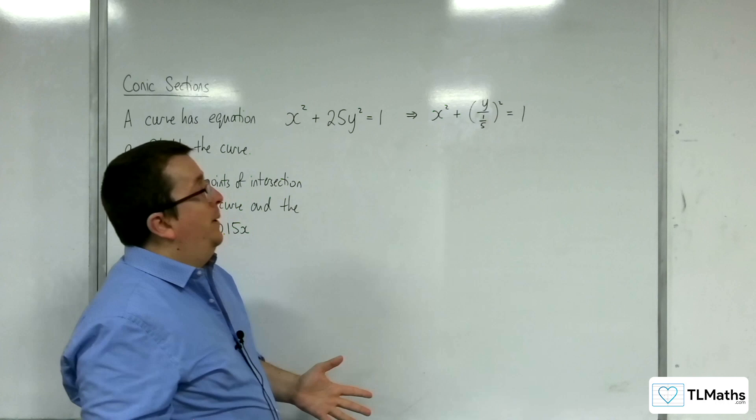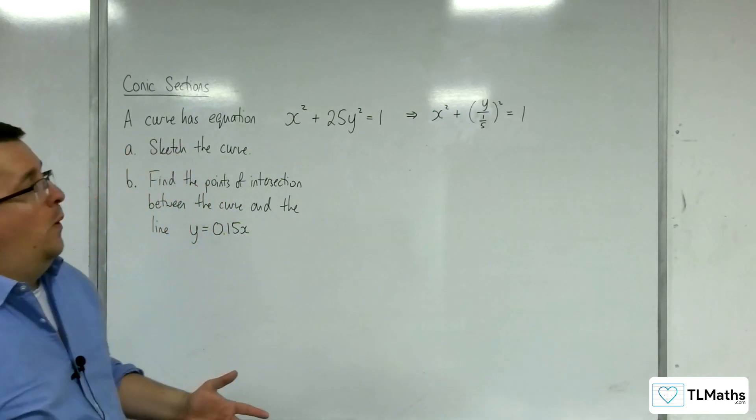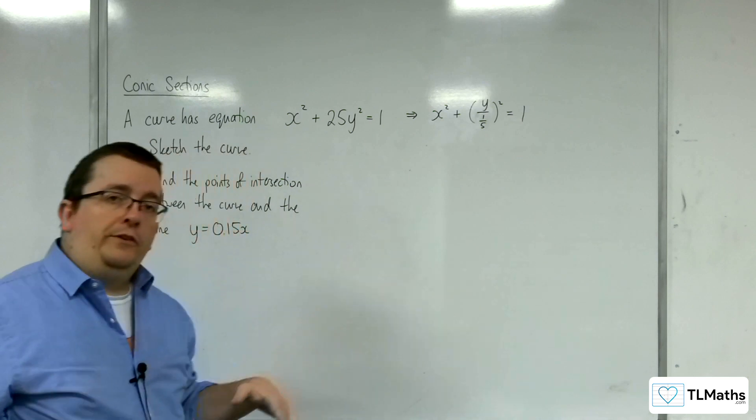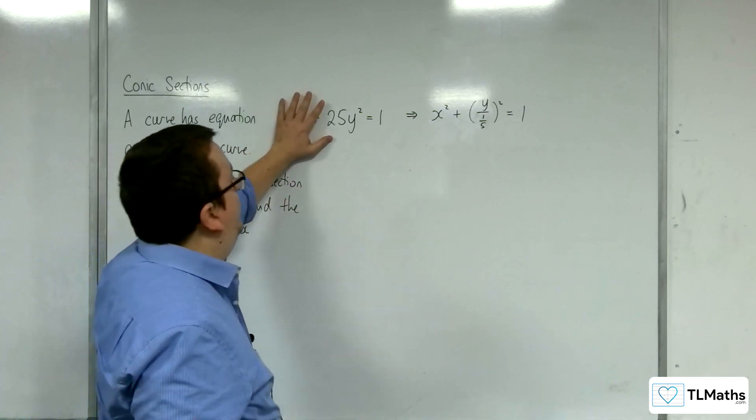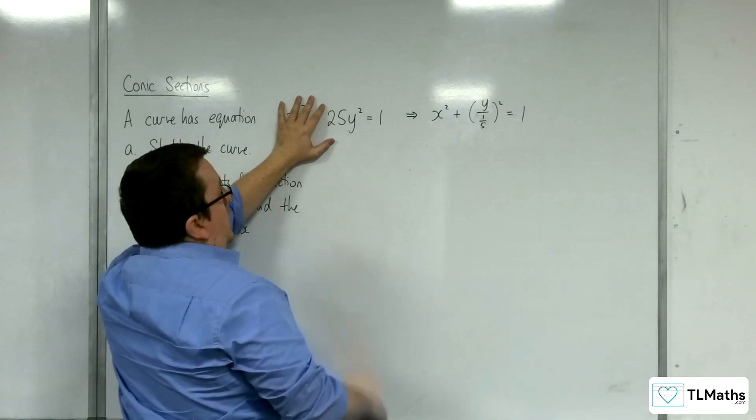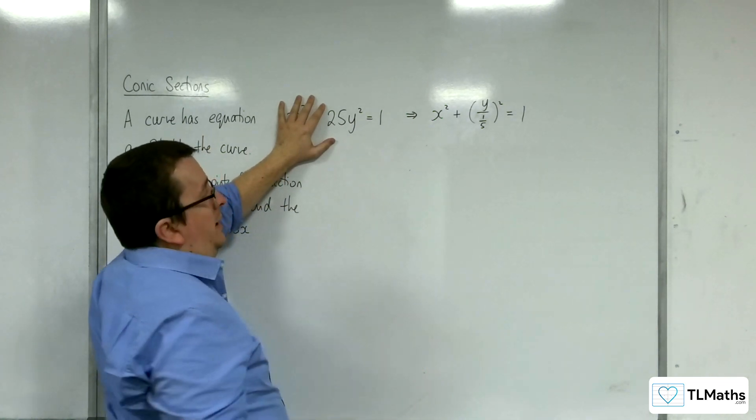Now there's always an alternative to this. You could always do it as, if you want to know where a graph crosses the y axis, then you put x as 0 and you solve that equation. So y squared equals 1 over 25, so y must be plus or minus a fifth.